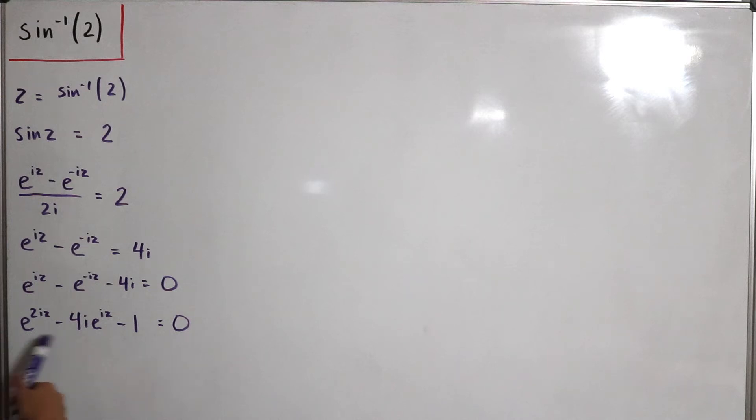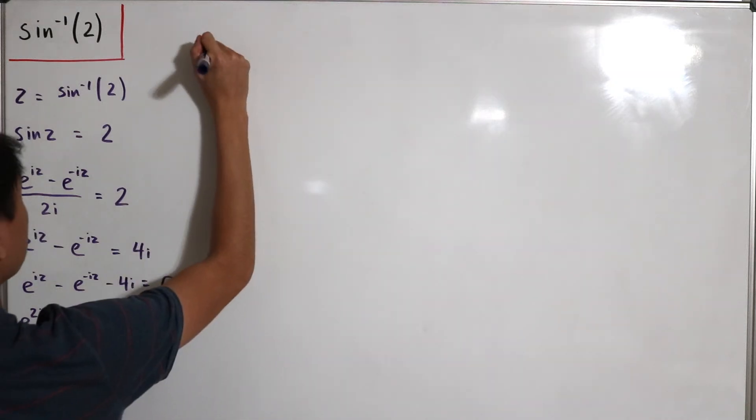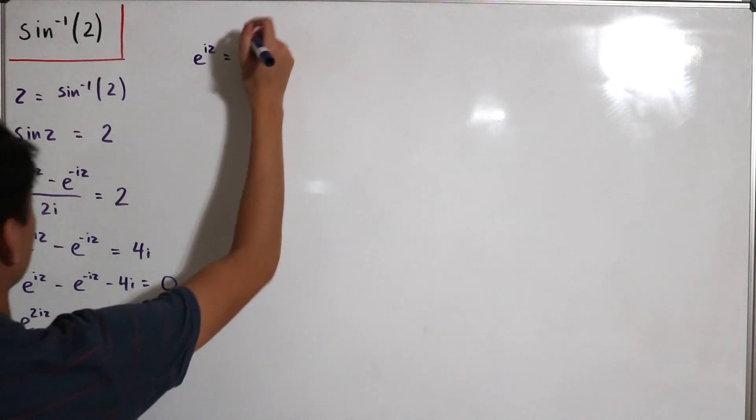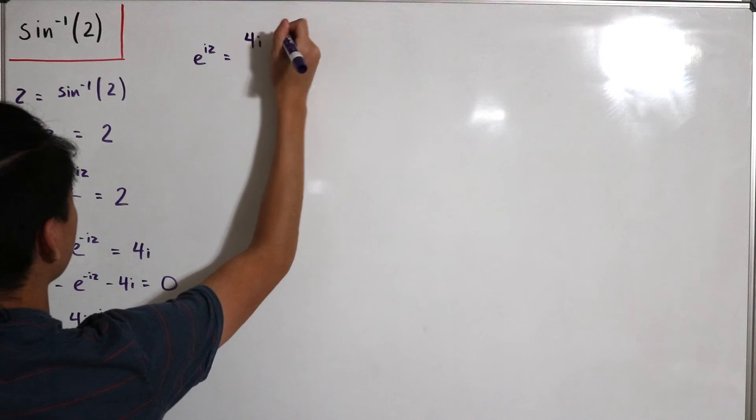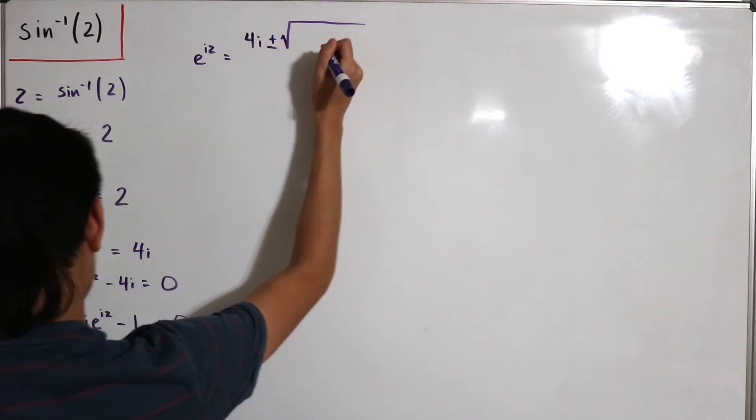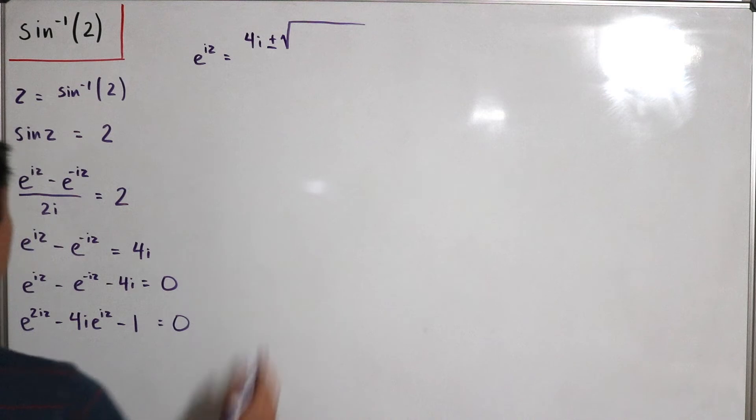Okay, so now we can actually solve for our solutions for z that satisfy this. Obviously the takeaway is that we can just use the quadratic formula to solve for specifically e to the power iz. So here e to the iz, then we set that equal to negative b. So in this case the coefficient associated would be 4i.